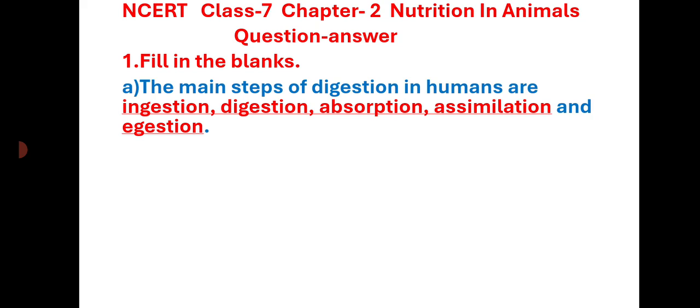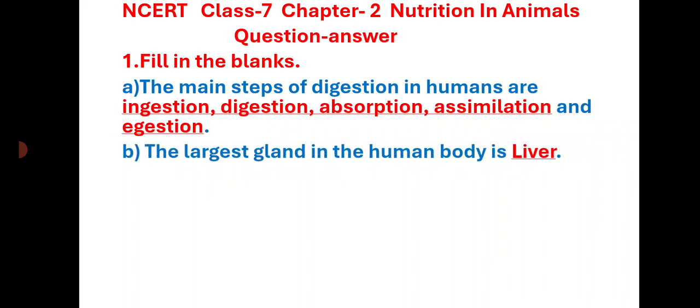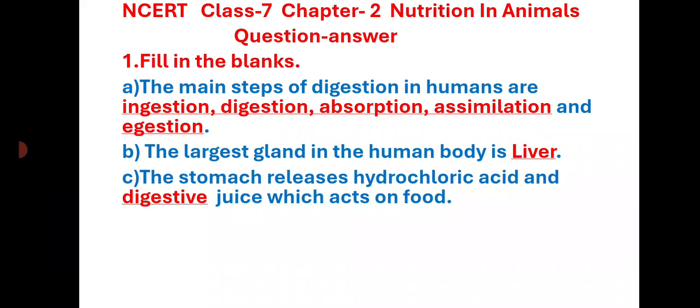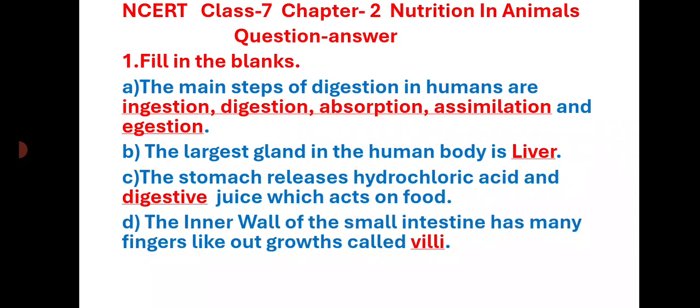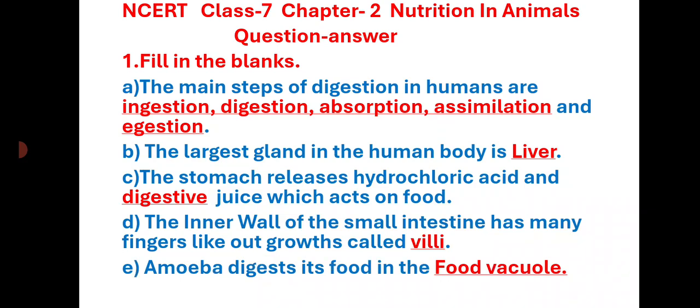The main steps of digestion in humans are ingestion, digestion, absorption, assimilation, and ejection. The largest gland in the human body is the liver. The stomach releases hydrochloric acid and digestive juice which acts on food. The inner wall of the small intestine has many finger-like outgrowths called villi. Amoeba digests its food in the food vacuole.